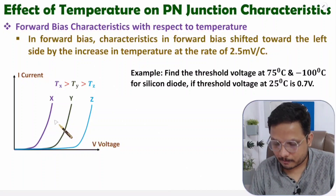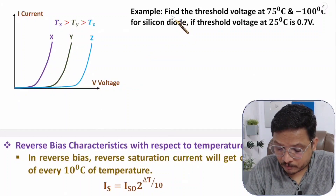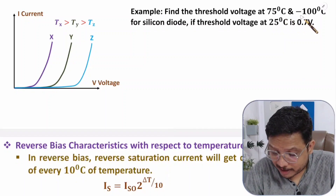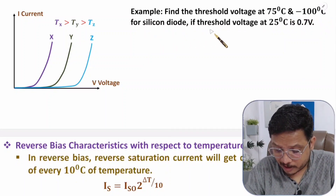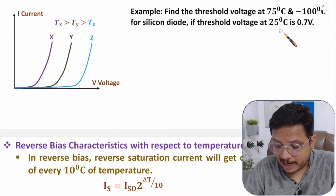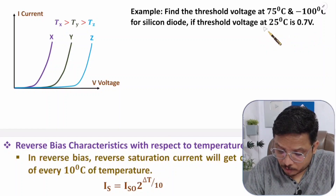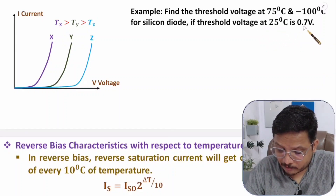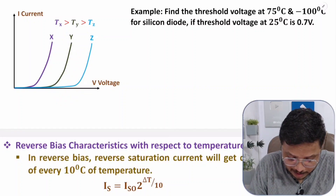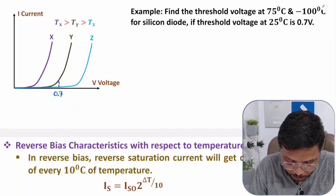Let's understand this with a practical example. We need to find the threshold voltage at 75°C and at -100°C for a silicon diode, given that the threshold voltage at 25°C is 0.7 volts. So here the threshold voltage is 0.7V at temperature 25°C, corresponding to characteristic Y.